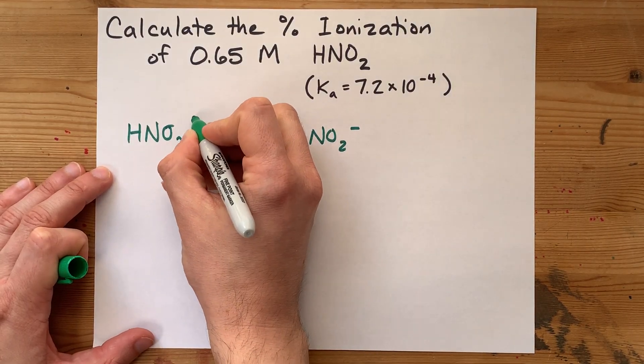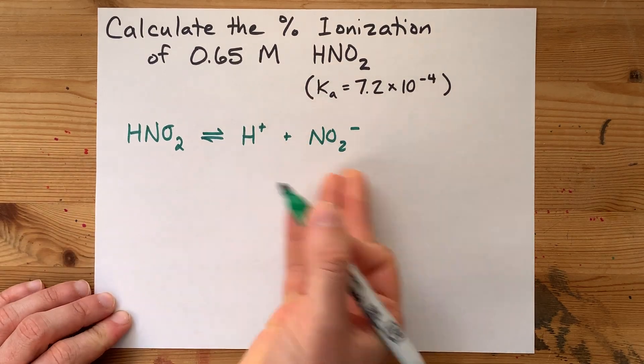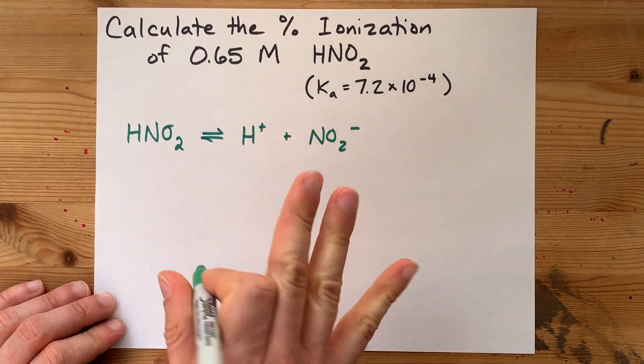Some teachers will write plus H2O here, and this would be H3O+. In terms of the equilibrium, it doesn't really matter.